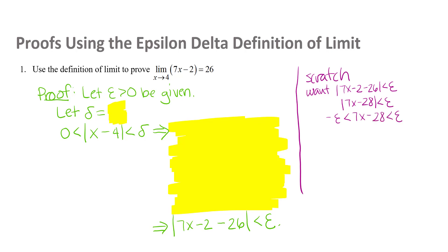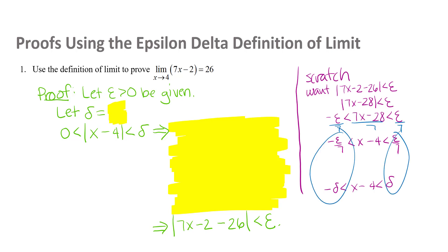What I want at the end is to have |7x − 2 − 26| less than epsilon. I'm going to work on that and figure out what to use for my delta, keeping in mind that I eventually want negative delta less than x − 4 less than delta. You can see that if I just divide by 7, I get what I'm after. So from this scratch work, the delta I'll use in the actual proof is epsilon over 7.